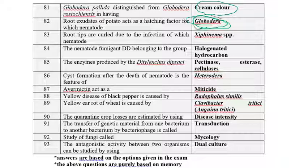Root tips are curled due to infection by Xiphinema. The nematode fumigant DD belongs to the group of halogenated hydrocarbons. The enzymes produced by Ditylenchus dipsaci are pectinases, esterases, and cellulases.